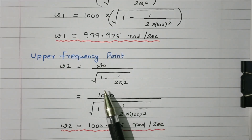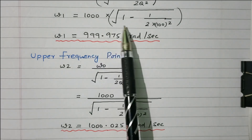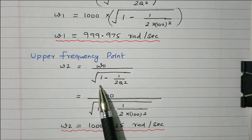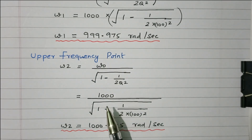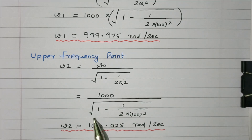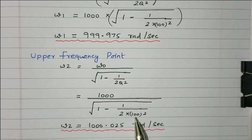Similarly for the upper frequency point omega 2: the formula is omega naught divided by the square root of 1 minus 1 divided by 2Q squared. With omega naught equal to 1000 and Q equal to 100, substituting gives 1000 divided by the square root of 1 minus 1 divided by (2 times 100 squared). Simplifying, omega 2 equals 1000.025 radian per second.